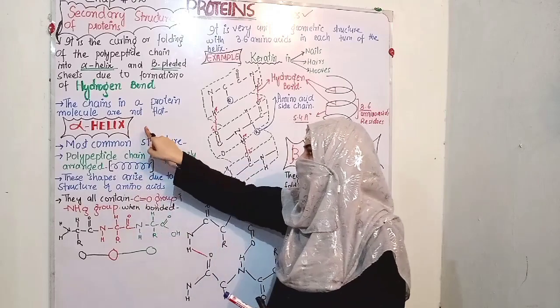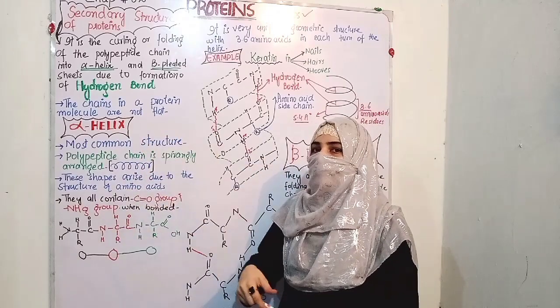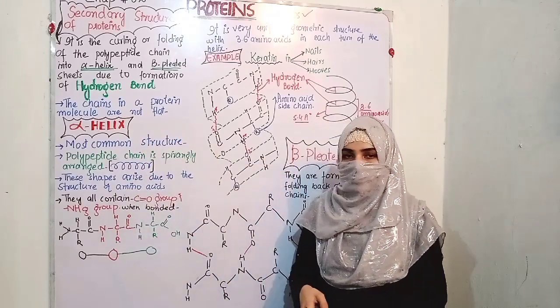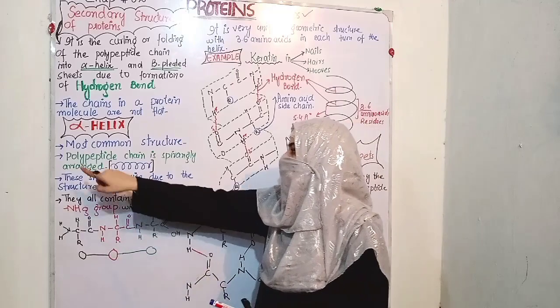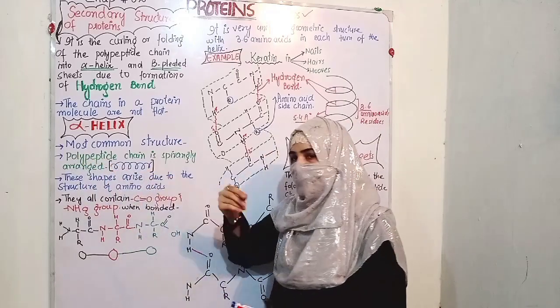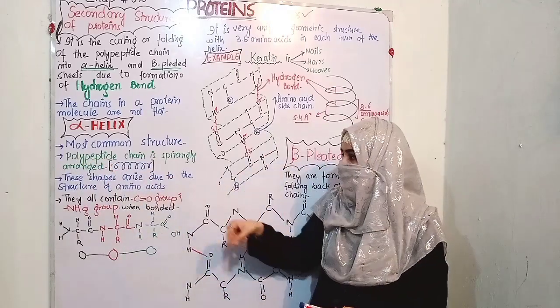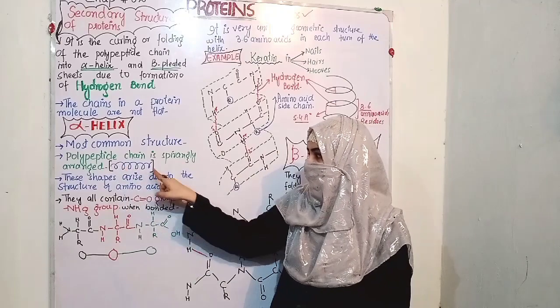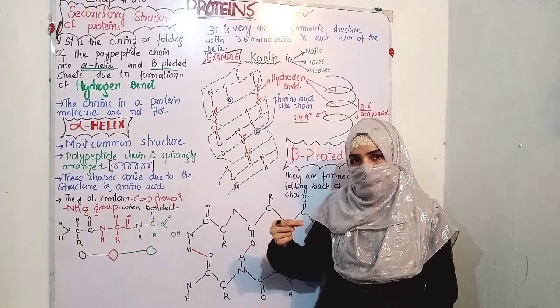Alpha helix is the most common secondary structure. The polypeptide chain is spirally arranged — it forms a spiral.